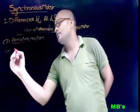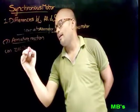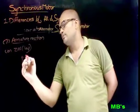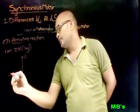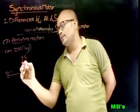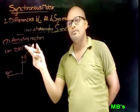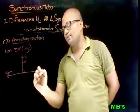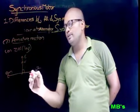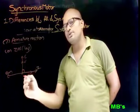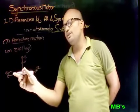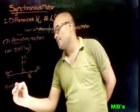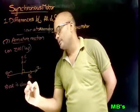Now consider the ZPF lag (pure inductive load) case. For the alternator, the current lags the terminal voltage V by 90 degrees, producing armature flux phi_A that opposes the main flux, reducing it. This means the armature reaction is a demagnetizing effect.